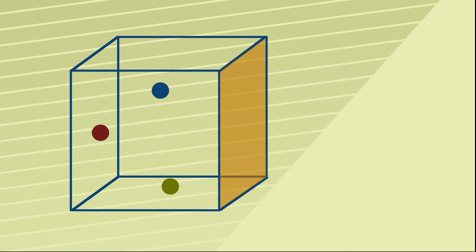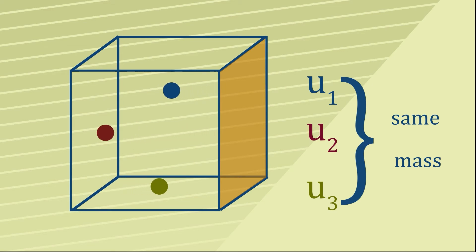So our next step is to move on now and have lots of particles moving at different speeds U1, U2, U3, flying backwards and forwards but only in the x direction, and then they're all colliding with the orange wall.